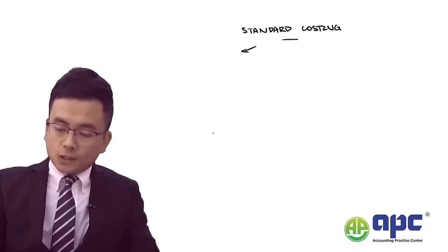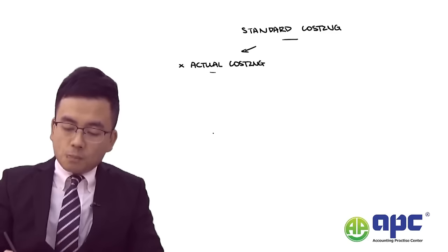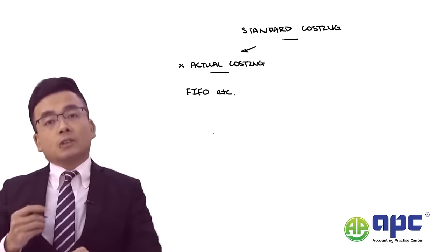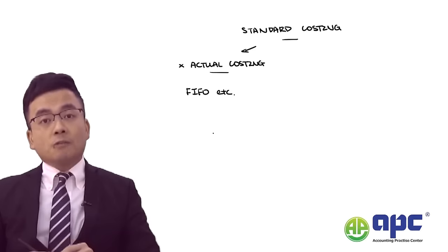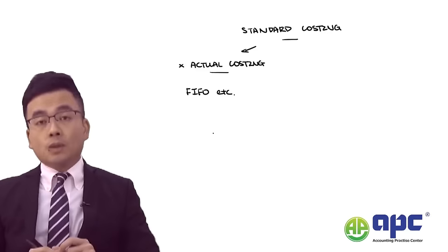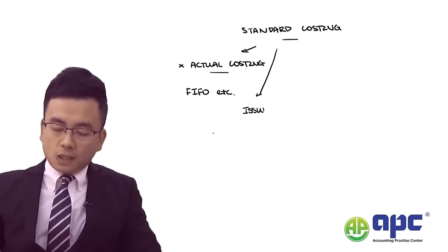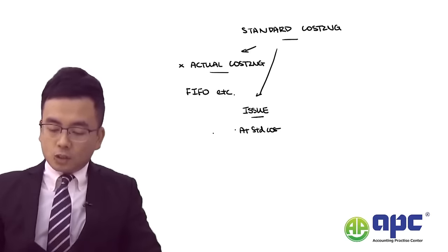The tricky area in the performance management exam is always the standard costing part. In today's section, I'm going to be revising standard costing in very simple words. Standard costing is different from actual costing. Previously you may have studied the AVCO method, FIFO method, or weighted average method for each issue of materials from the warehouse. Using standard costing, we issue materials to the production department at the standard cost per unit — for example, $5 per kilogram for materials or $3 per hour for labour.